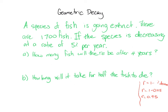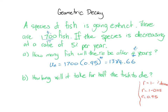Doing everything we did before: un = u1 × r^t. u1 = 1700, r = 0.95, and the time is four years, so we raise it to the power of 4. Putting that in the calculator we get 1384.66. Here we have the opposite rounding situation — the fish are decreasing, but that last 0.66 of a fish has not yet died, so we round up. There are 1385 fish.